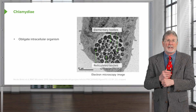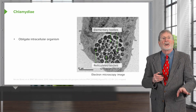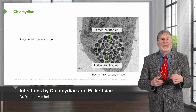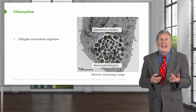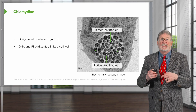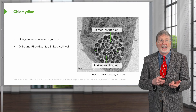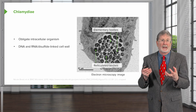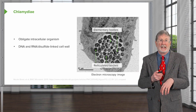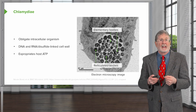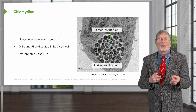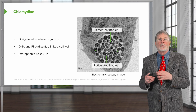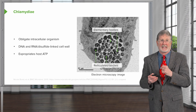Let's move up the phylogenetic tree and talk about chlamydia. This is an obligate intracellular organism. It has DNA, it has RNA, and it has a disulfide-linked cell wall — some of the key characteristics. Its pathology occurs because it uses up all the host ATP and will cause a lytic infection on that basis.